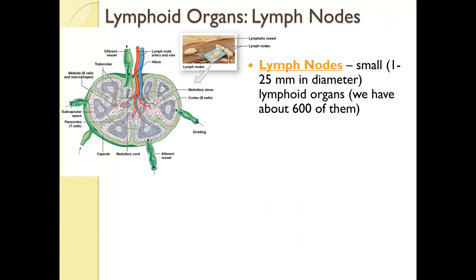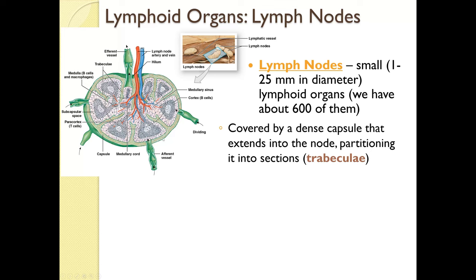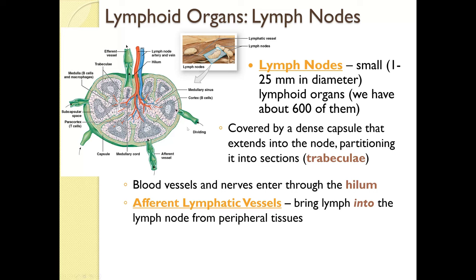The difference between lymphoid organs and tissues is mainly that organs have a capsule that surrounds them, distinctly separating them from surrounding tissues. Lymph nodes are small lymphoid organs — we have about 600, ranging from 1 to 25 millimeters in diameter, roughly the shape of a kidney bean. They are covered in a dense capsule that extends into the node, partitioning it into sections called trabeculae. Blood vessels and nerves enter the node through the hilum.